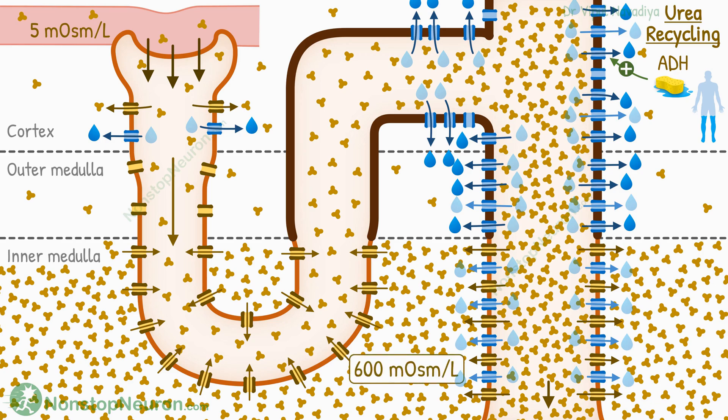The maximum urea concentration that can be achieved this way is 600 milliosmoles per liter. Please note that the urea concentration in urine is also about the same during this. Thus, in the presence of ADH, urea concentration in the inner medulla as well as in urine increases up to 600 milliosmoles per liter.